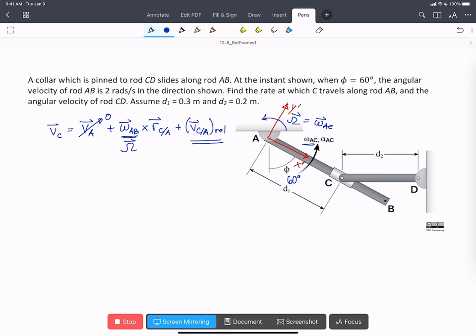This is what we're being asked to find when we're asked about the rate C travels along AB. We know omega AB. We know r C with respect to A, but we still have two unknowns in this equation. So we're going to need some more information. Let's work this one out first.